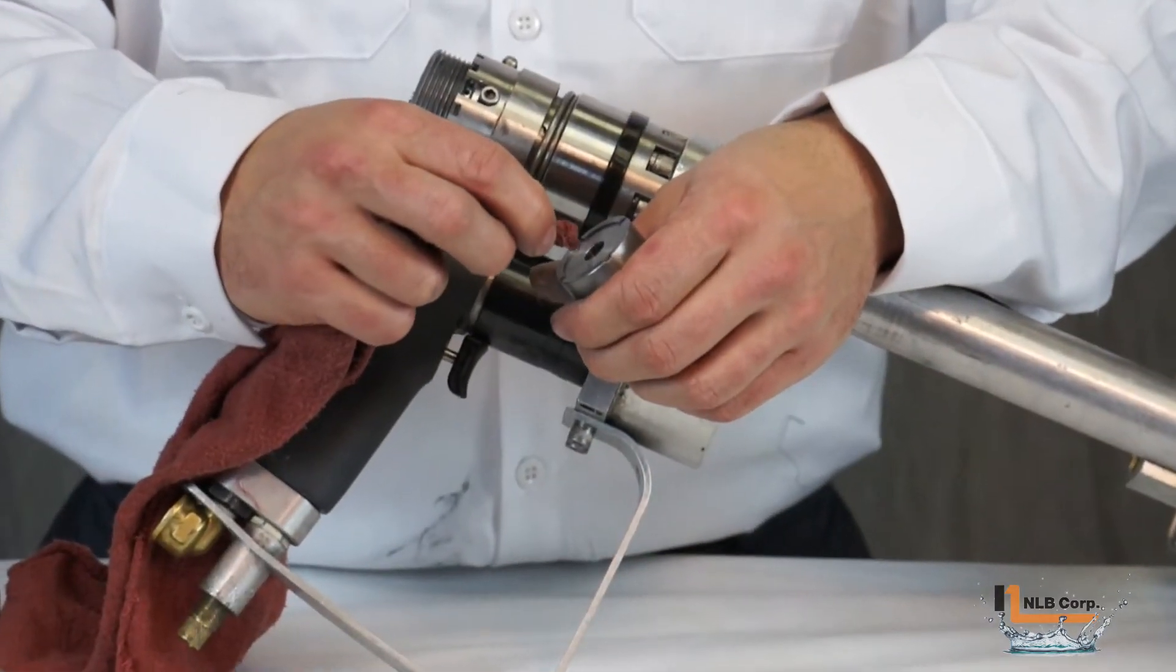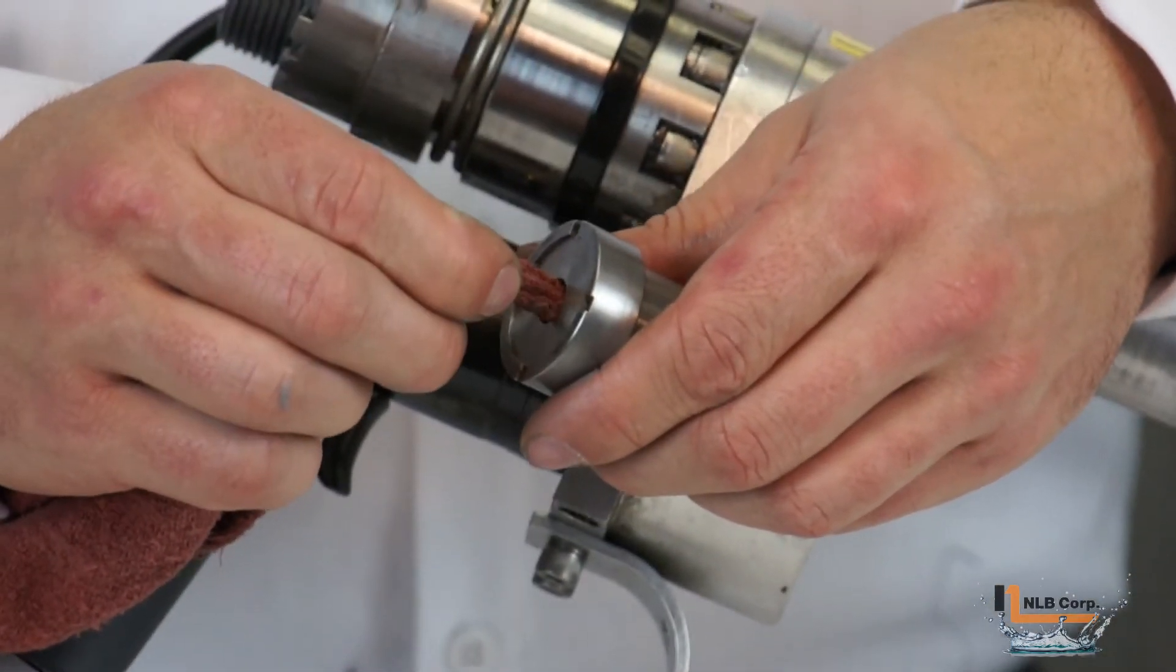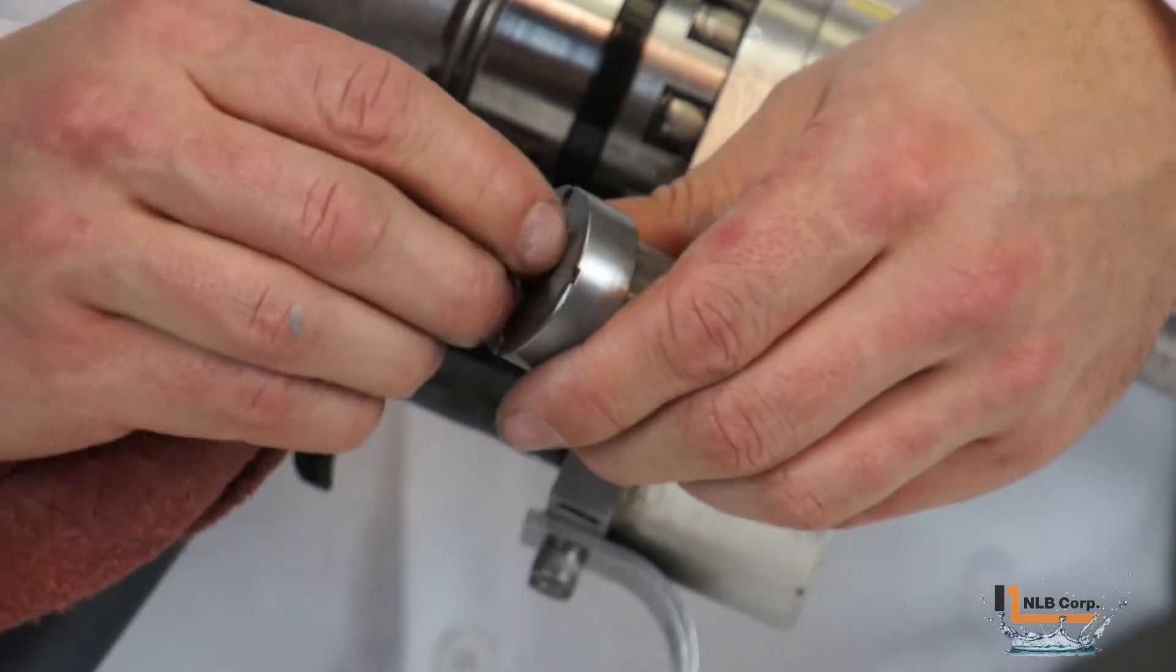Before installing a new seal, clean the ID of the housing with a shop rag to ensure that all the debris is removed.